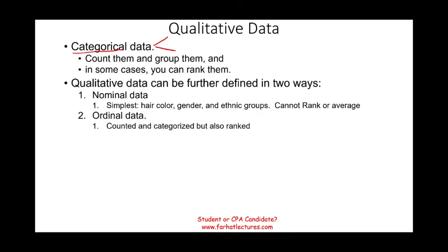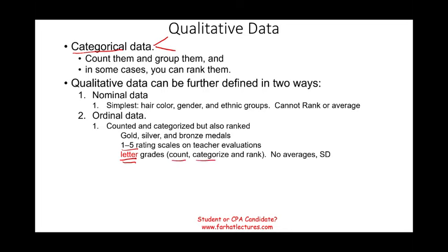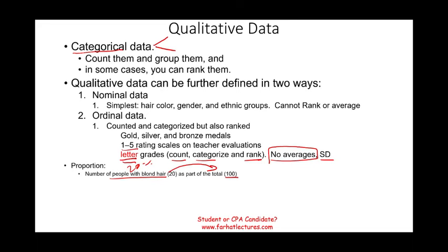Ordinal data, the other type of qualitative data, you can count and categorize them, but you can also rank them. Here we're talking about, for example, when in the Olympics they win the medal: gold, silver, and bronze. One, two, and three. You are ranking them. Or when you rank your professors at the end of the semester, rating from one to five. Letter grades is a form of ranking. You can count, categorize, and rank, like A, B, C, D. You can rank them, but you cannot find the average or the standard deviation or any other statistical method. You can run something called proportion on these type of data.